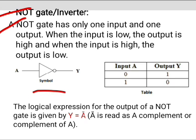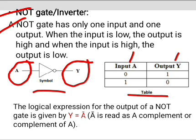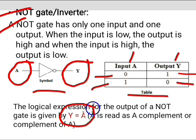This is the symbol of the NOT gate. It has one input A and one output Y. Observe the table: when the input A is low, that means 0, the output is high, that means 1. In case 2, when the input A is high, the output becomes low, that means 0.